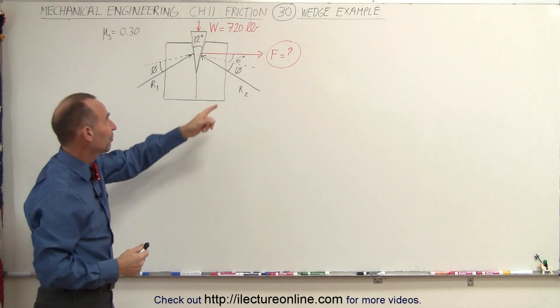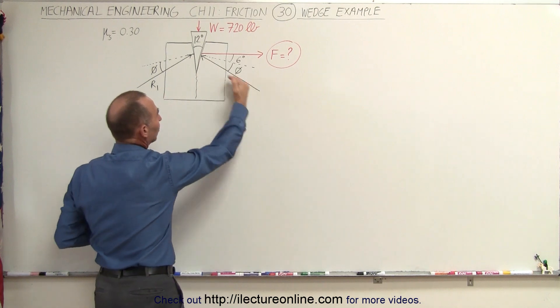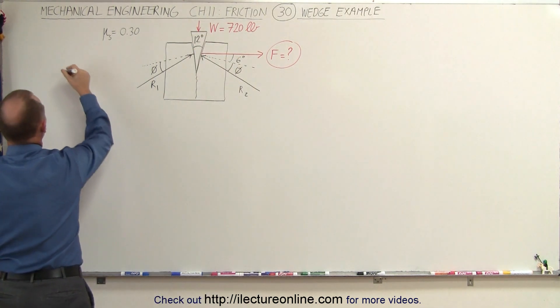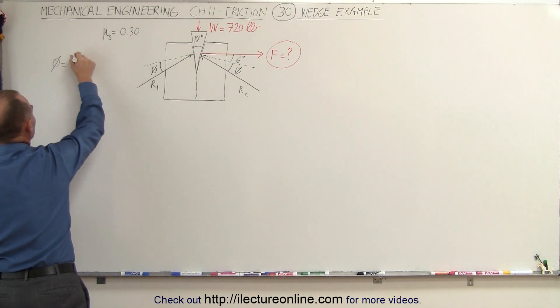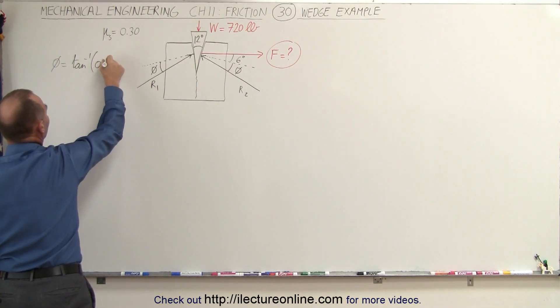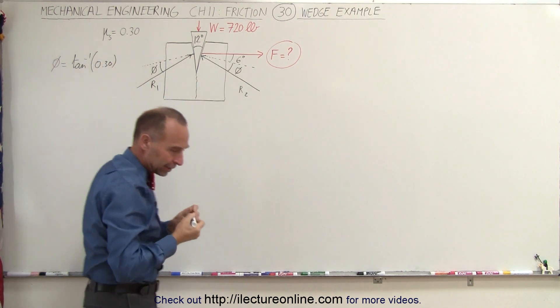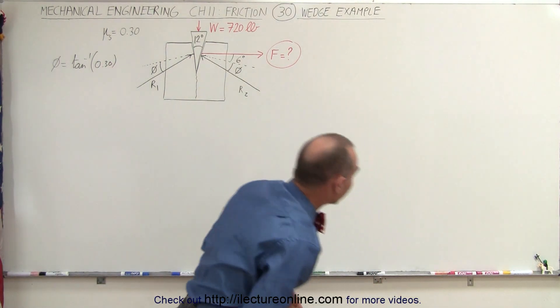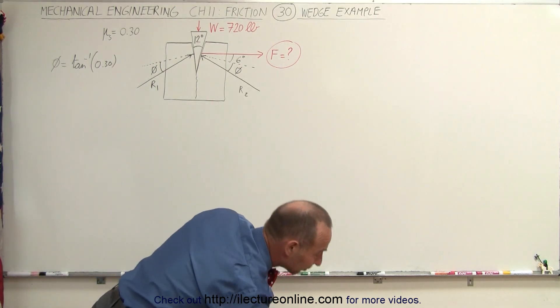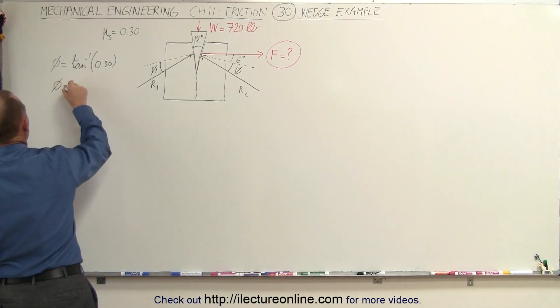This allows us to find the angle phi, which is the angle between the reaction force and the normal to the wedge. We can say that phi will be equal to the arctangent of the static friction. With a calculator, we can find that's 16.7 degrees.